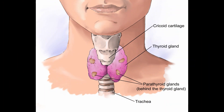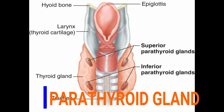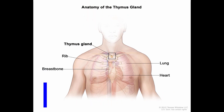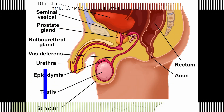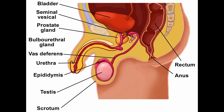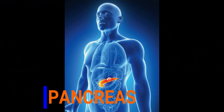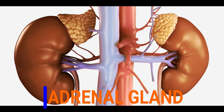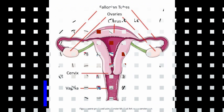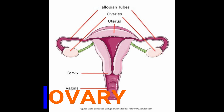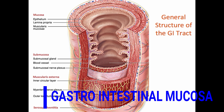First, pituitary; then thyroid; then parathyroid; thymus; pineal body; testis; pancreas; adrenal glands; placenta; ovary; and gastrointestinal mucosa.